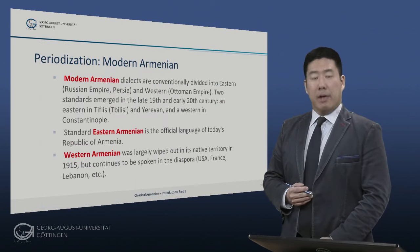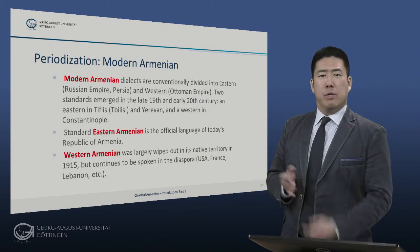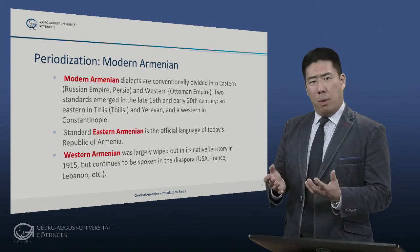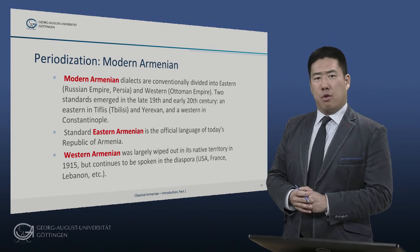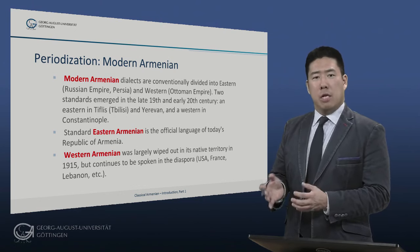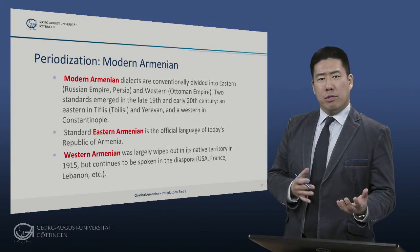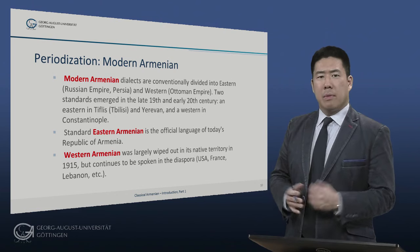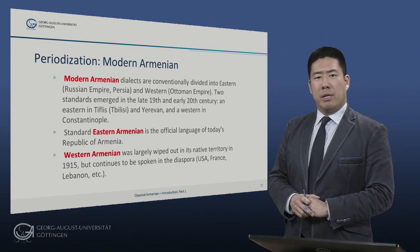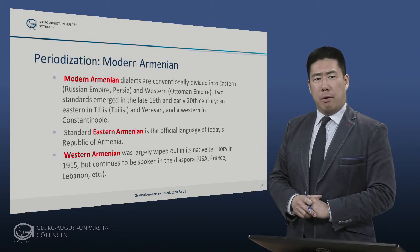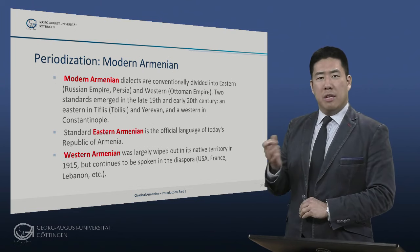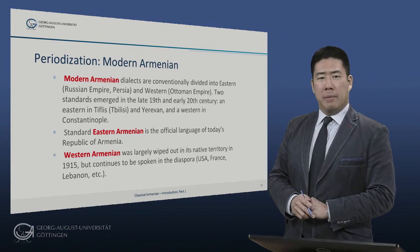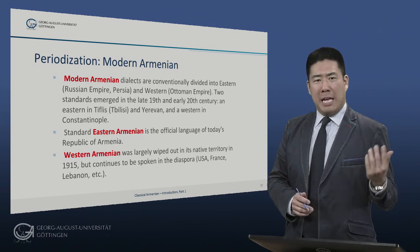Modern Armenian dialects are conventionally divided into Eastern and Western. The Eastern dialects are spoken in what was, until 1917, the Russian Empire and Persia, today's Iran. The Western dialects were spoken in what was, until World War I, the Ottoman Empire. During the late 19th and early 20th centuries, two standards emerged: an Eastern standard in Tiflis, modern Tbilisi, and Yerevan, and a Western standard in the Ottoman Empire, centered on Constantinople.